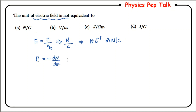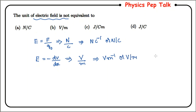Here, dV represents the change in potential and dx represents the displacement. The unit of potential is Volt and displacement is in meters, therefore the electrical field will have the unit Volt per meter, which we can write as V/m.